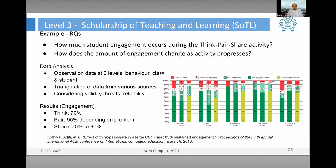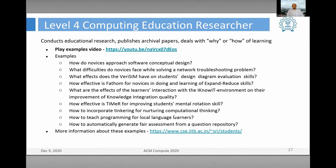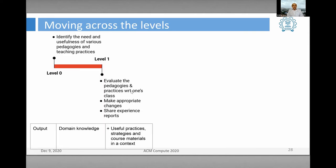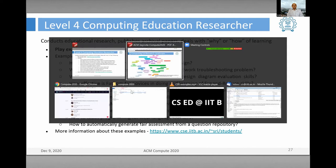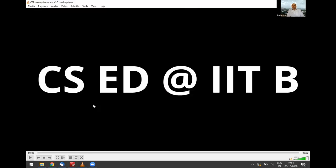At level four, the researcher and teacher seamlessly engage in educational research, publishing archival papers and dealing with the why and how of learning. This slide has a lot of questions, so instead of showing them, I'll play a video of the people who have worked on those questions.